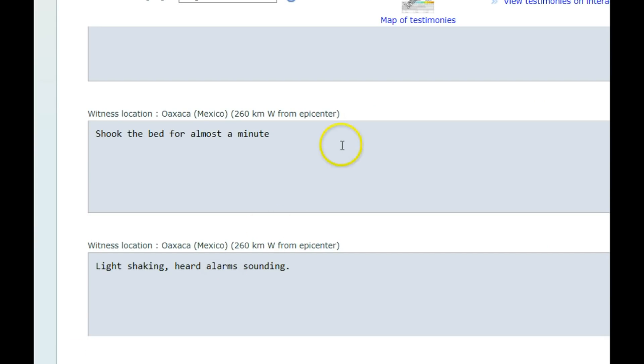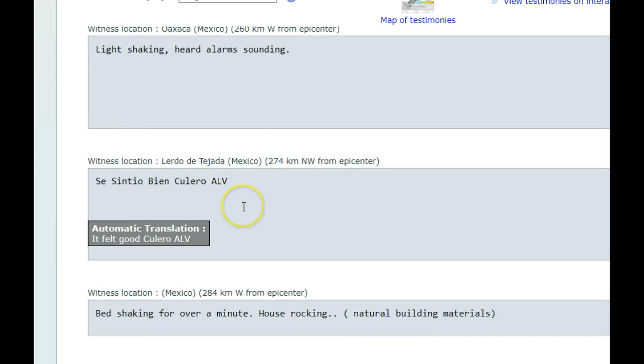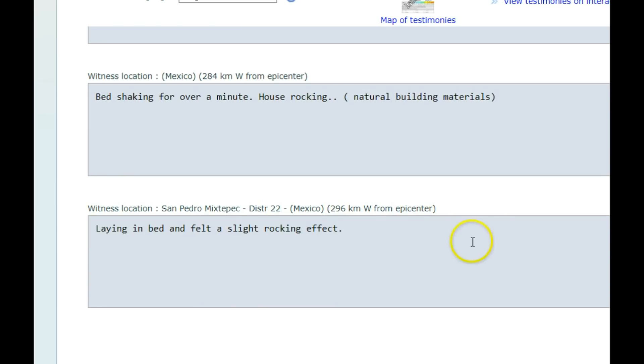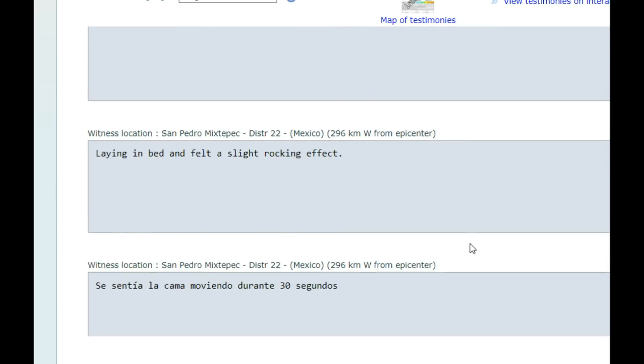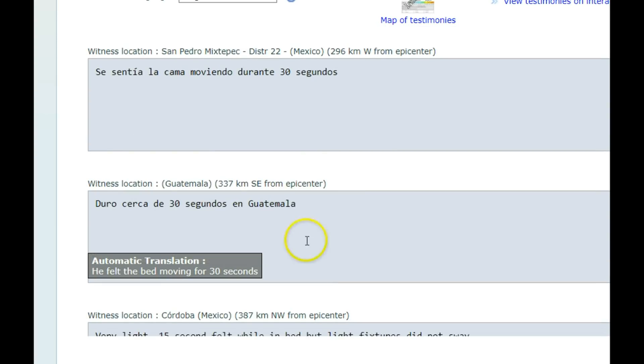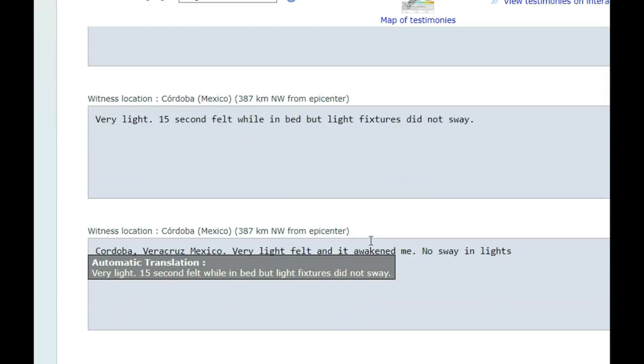More reports: shook the bed for almost a minute, light shaking heard alarm sounding, felt good, bed shaking for over a minute, house rocking, lying in bed and felt a slight rocking effect. These are like 296 kilometers. That's 183 miles from where this earthquake occurred.